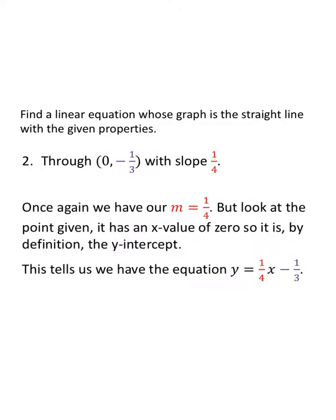Going through the point (0, negative one third) with slope one fourth. This point has an x value of zero — it's a y-intercept. If I already have the y-intercept, I can fill in m and b directly. Y equals one fourth x minus one third.